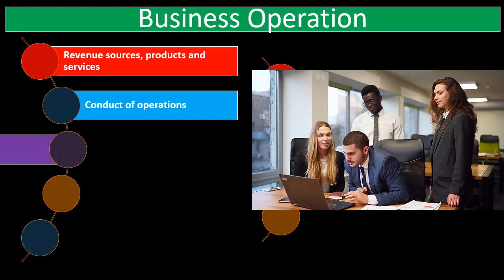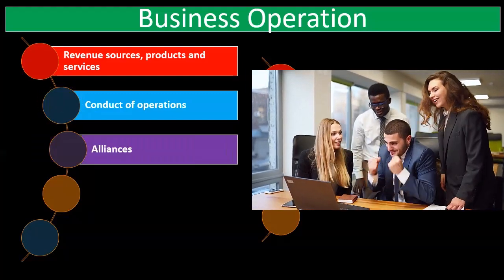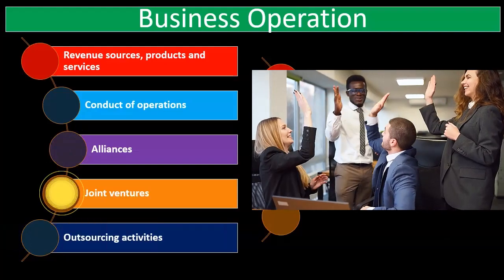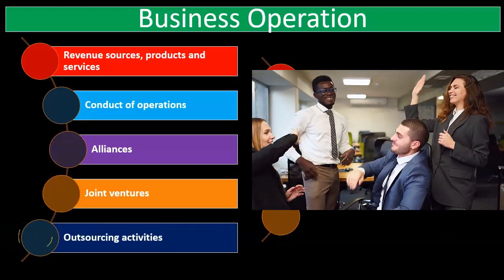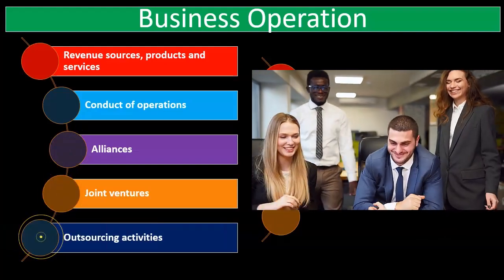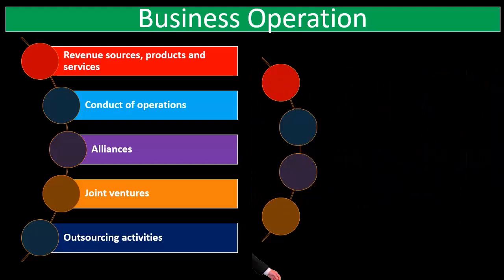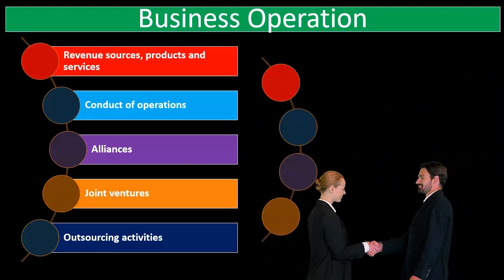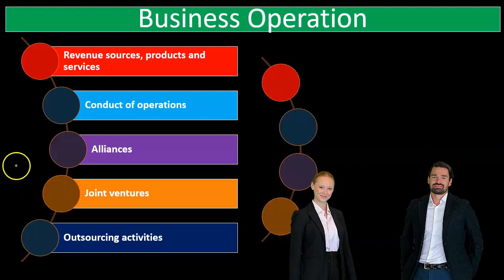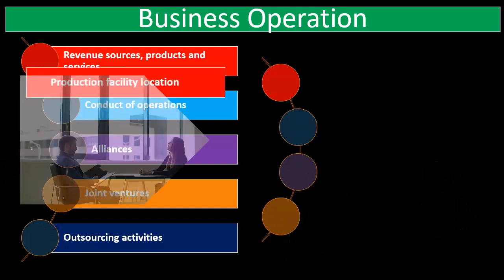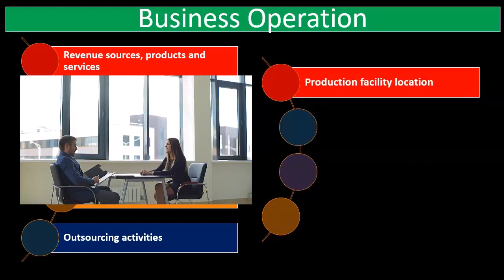Conduct and operations — we want to know who their alliances are, whether they have any joint ventures, and if they outsource any of their activities. Are those key activities? Are they very important? How dependent are they on joint ventures, alliances, and other people involved? Because that'll help us assess some of our risk factors with regard to them.